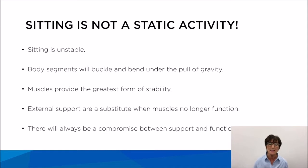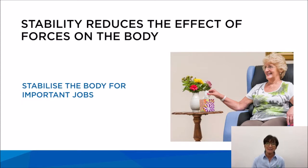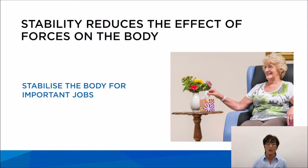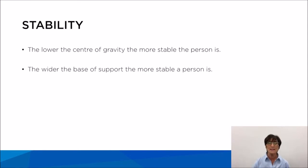There will always be a compromise between support and function - if you over-support a body you can reduce function, so it's about getting the balance right. Stability is the answer. Stability reduces the effect of forces on the body, so our main goal of sitting is to stabilize the body. We stabilize the body by lowering the center of gravity and giving the client a wide base of support, and by making sure that the body is loaded. Stability will reduce the forces at work on the body.